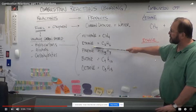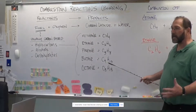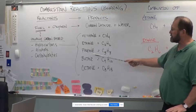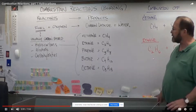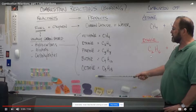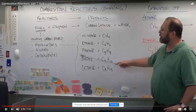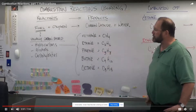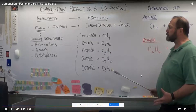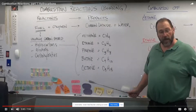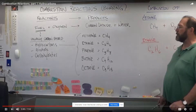Methane and ethane are found in natural gas. You're also familiar with LP gas called propane, or butane found in a disposable lighter, and octane, which is gasoline. Those are all hydrocarbons. We're going to address how to balance equations with hydrocarbons, and we just demoed a combustion reaction with hydrocarbons.